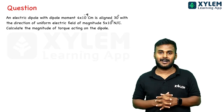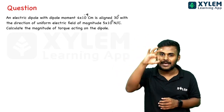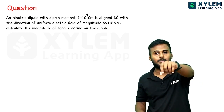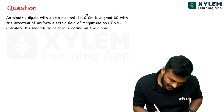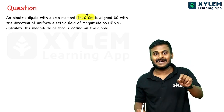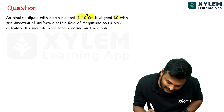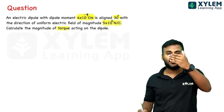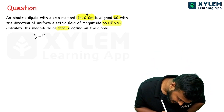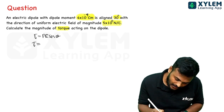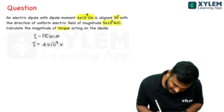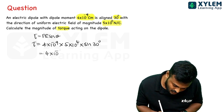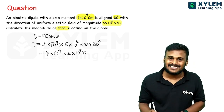Question 5: A dipole is placed in a uniform electric field. Given data: dipole moment p = 4×10⁻⁹ C·m, angle θ = 30°, electric field E = 5×10⁴ N/C. We use the torque equation: τ = pE sinθ. Substituting: τ = 4×10⁻⁹ × 5×10⁴ × sin30°.